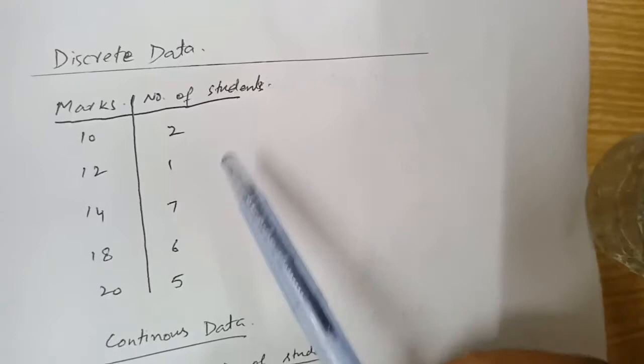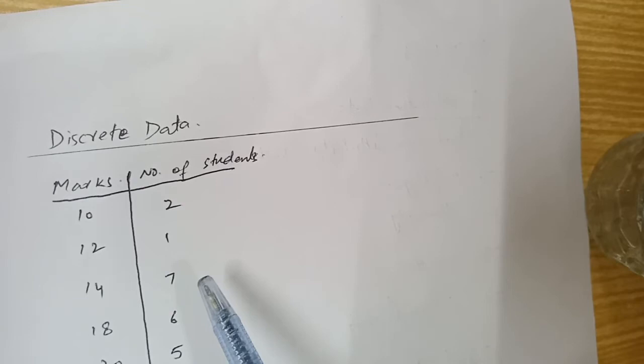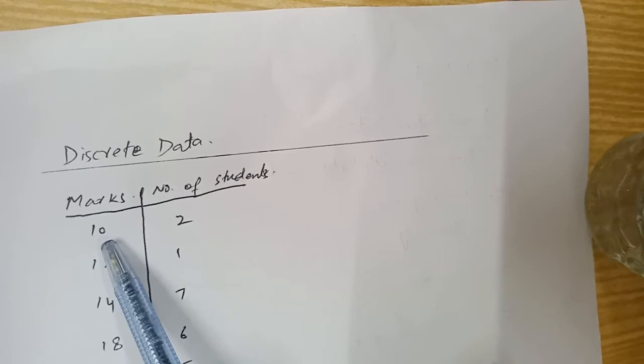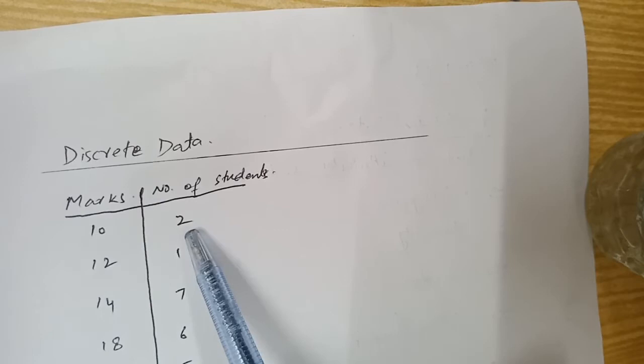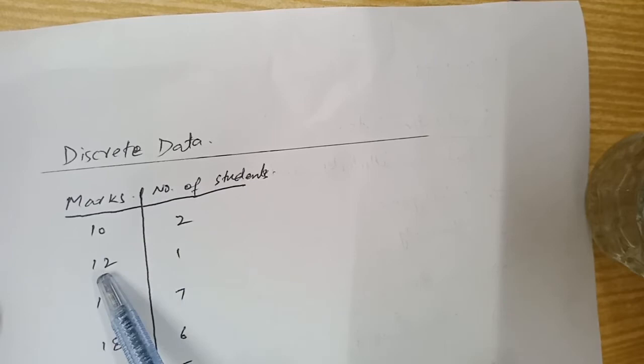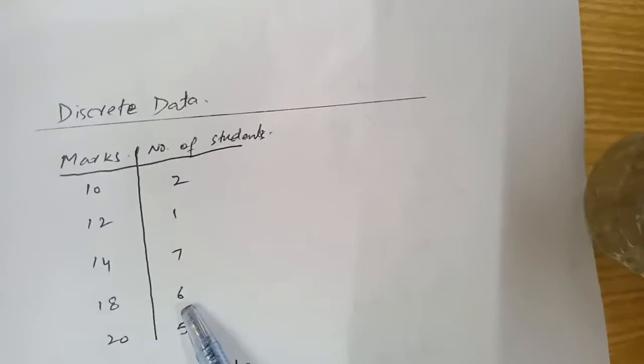Now we will discuss the two sub-types of quantitative data. The first one is discrete data, which contains exact values. For example, in a class: how many students got 10 marks — 2 students; how many got 12 marks — 1 student. We are talking about exact values: 2 students got 10 marks, 1 student got 12 marks, 7 students got 14 marks, 6 students got 18 marks, and 5 students got 20 marks. This is discrete data.